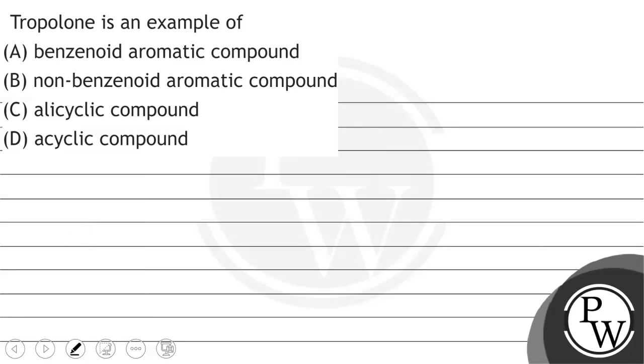Hello, let's see the question. The question says that tropolone is an example of benzenoid aromatic compound, non-benzenoid aromatic compound, alicyclic compound, or acyclic compound.